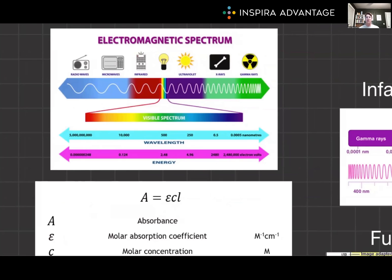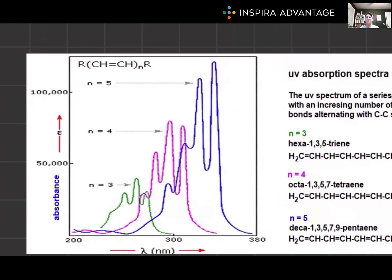First, let's focus on UV-Vis spectroscopy. This uses UV, or ultraviolet, and visible light to interact with molecules. When a molecule absorbs UV or visible light, it causes electrons to be excited from their ground state and move to higher energy levels. The amount of light absorbed by a molecule at different wavelengths is measured using a UV-Vis spectrometer, producing a spectrum that plots absorbance versus wavelength, which would look something like this.